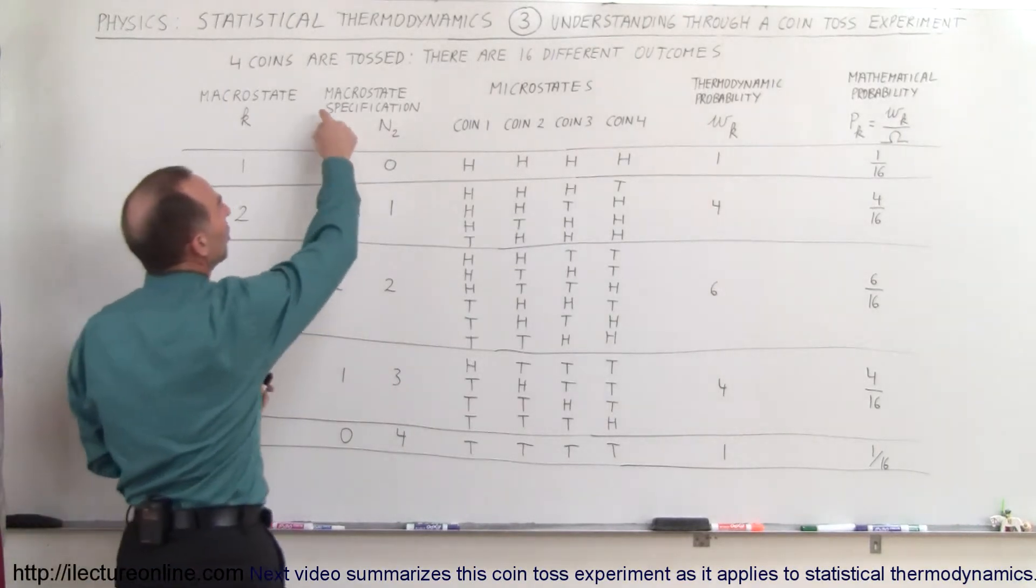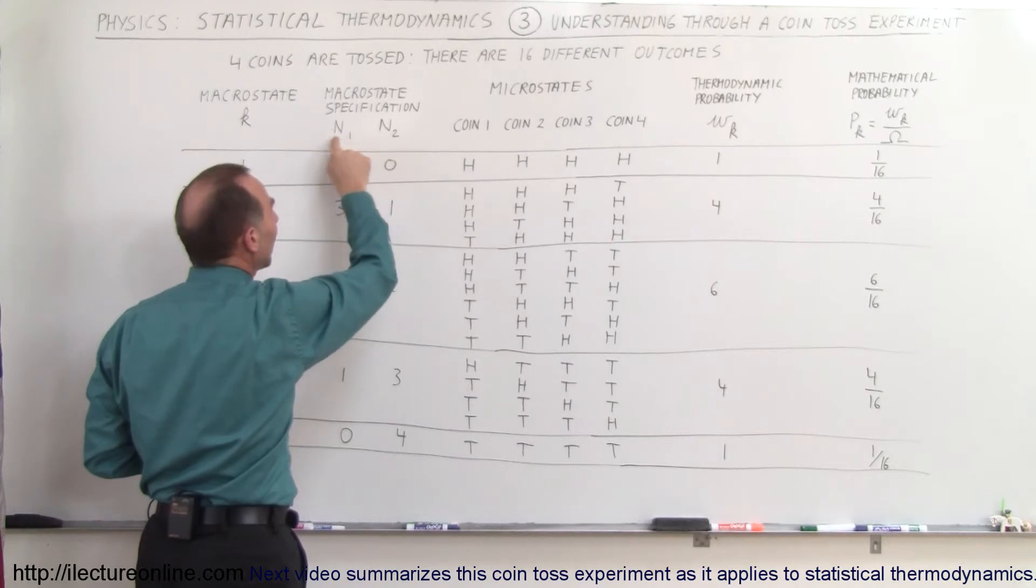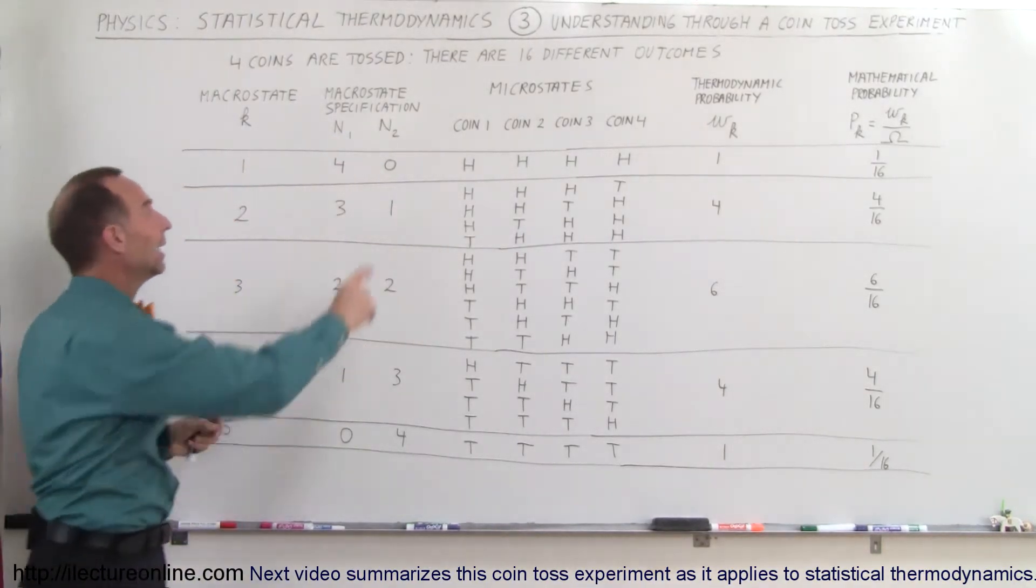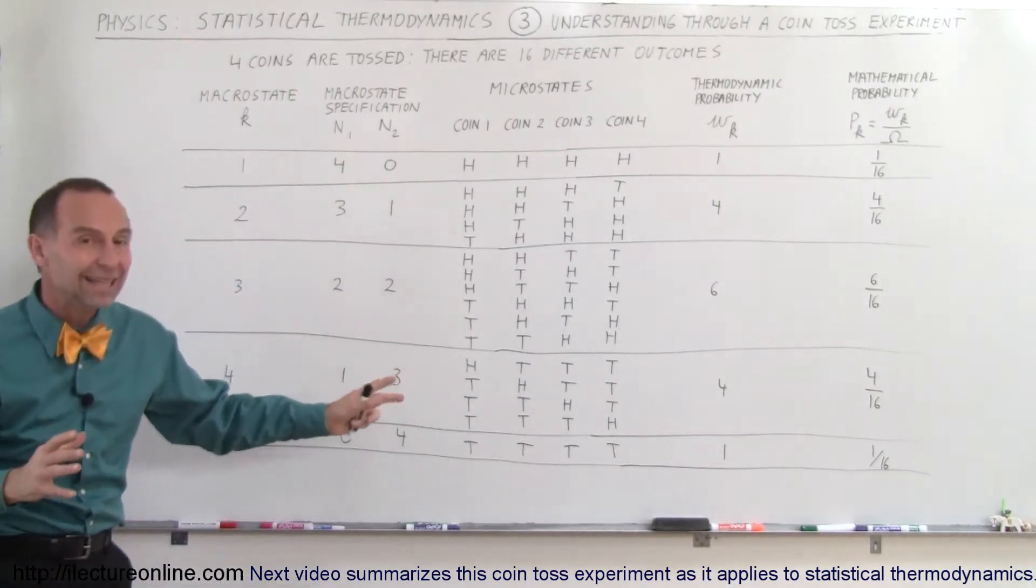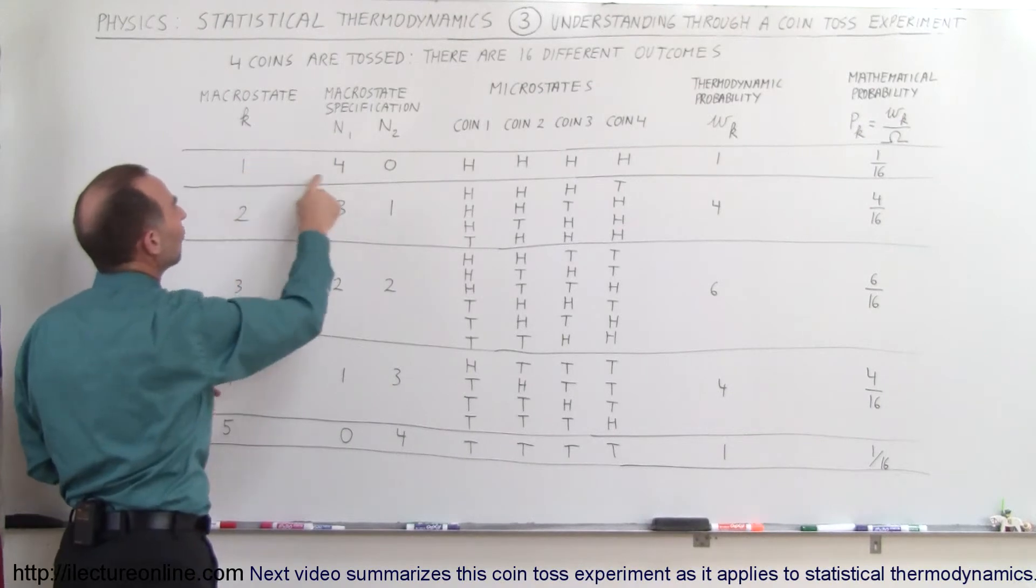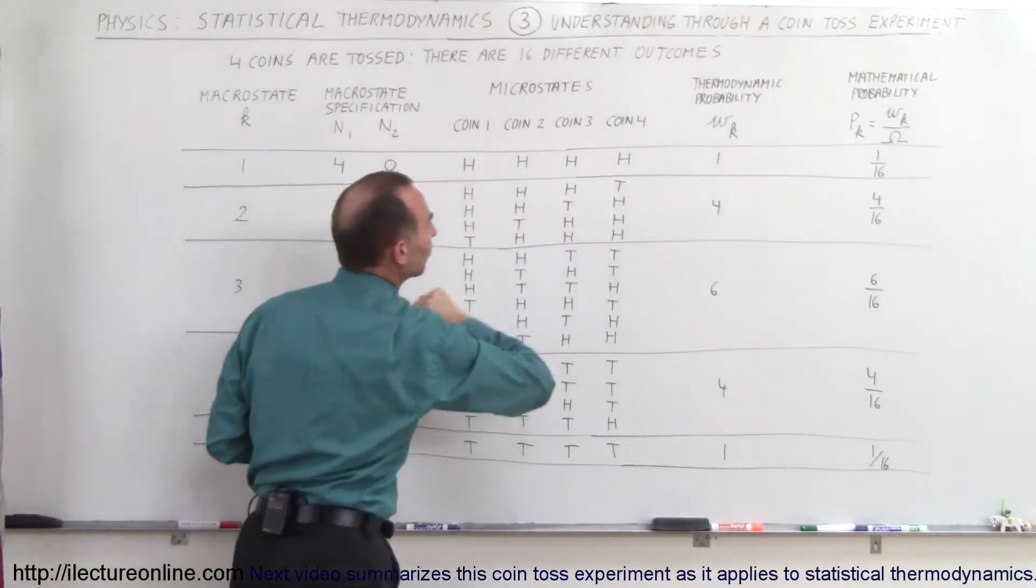Also notice we have what we call a macro state specification, n1 and n2. n1 represents the number of entities that come up heads, and n2 represents the number of entities that come up tails. So in the first case, macro state 1, four come up heads, zero come up tails. You can see the arrangement right here.